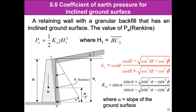For Kp, it is the same equation but with the sign reversed — positive in the upper part and negative in the lower part. The resultant PA acts parallel to the inclined surface, meaning PA has an angle of alpha from the horizontal plane. Since the stress distribution is triangular, we can find PA equal to 0.5 × Ka × gamma × H1².